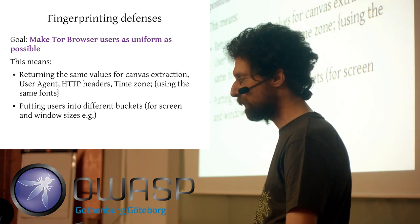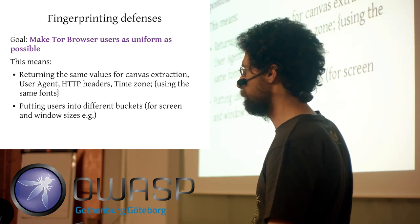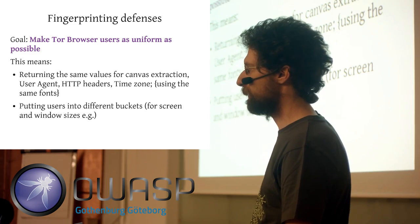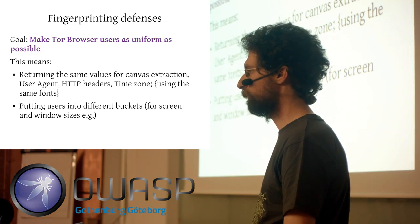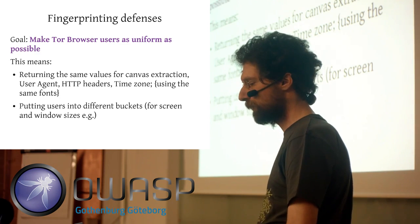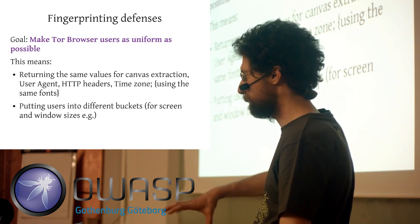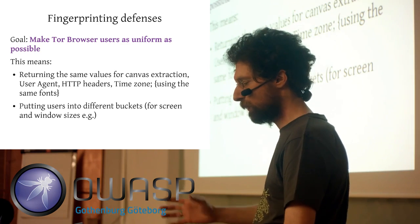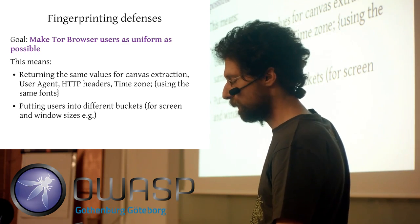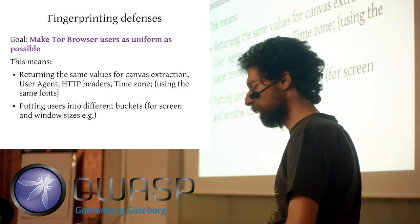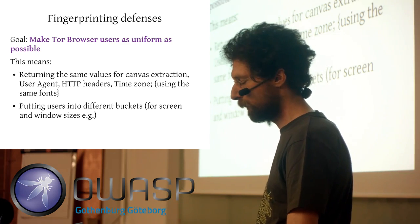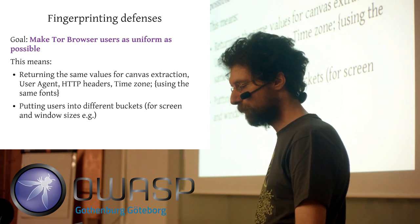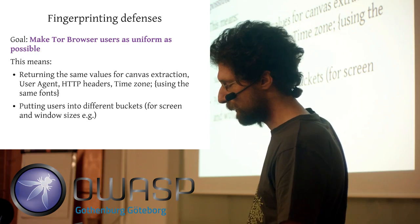For things like screen and window sizes, we are rounding your window sizes to a multiple of 200 and 100. This gives a bunch of different buckets, which hopefully have many users in each bucket, making it much harder to single users out based on their screen sizes.